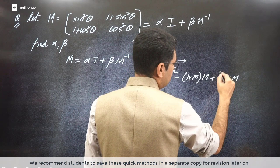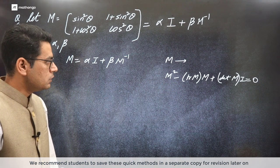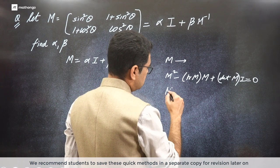This will be its characteristic equation. Now I look at its trace. What is the trace? sin square theta plus cos square theta - oh jackpot sir, we got it. What did we get? 1.